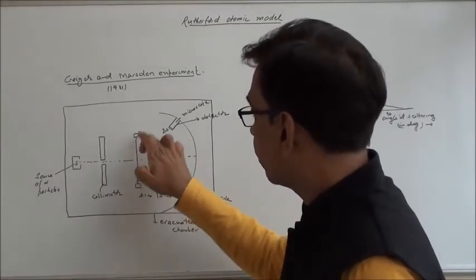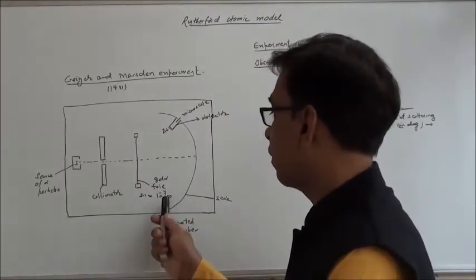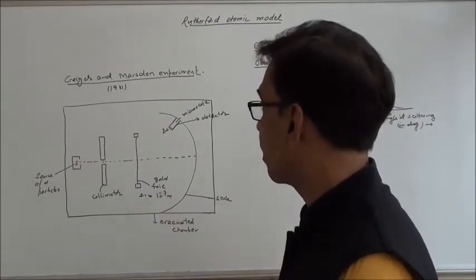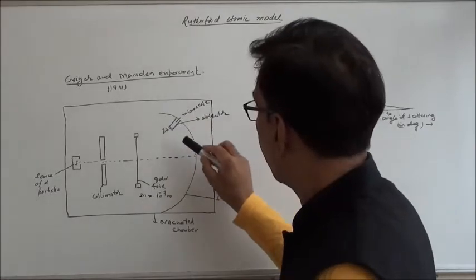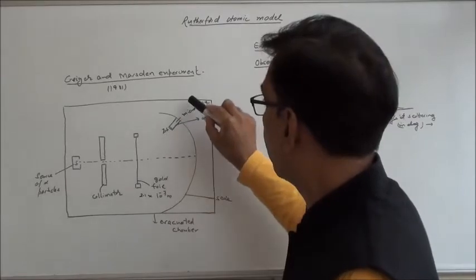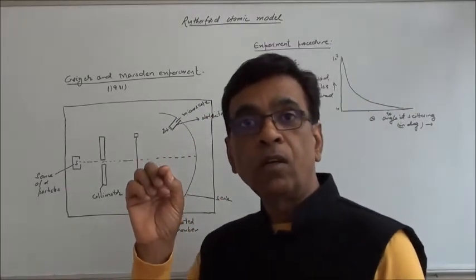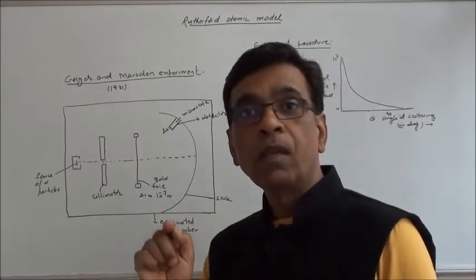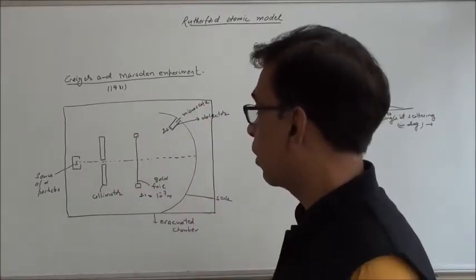This is a gold foil of thickness of the order of 10 raised to power minus 7 meter — precisely it was 2.1 × 10⁻⁷ meter. And then there is a scale on which we have a detector. The two most important parts of the detector are a microscope and a zinc sulfide screen. When alpha particles fall onto the zinc sulfide, this produces scintillation — sparks — and those sparks are observed using the microscope.